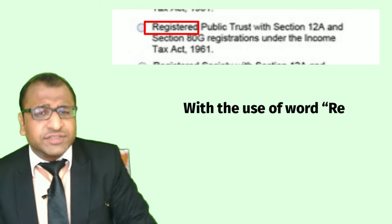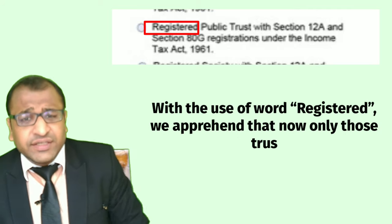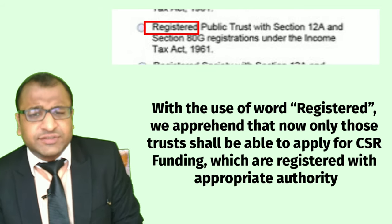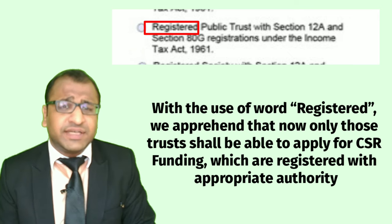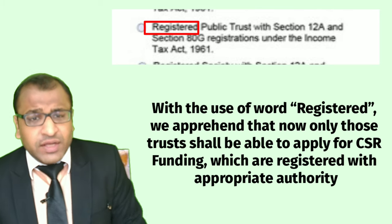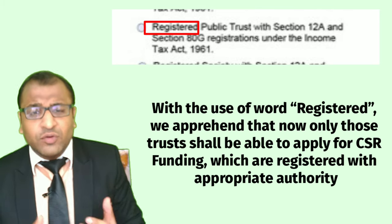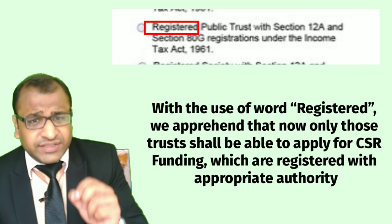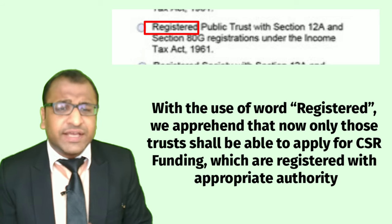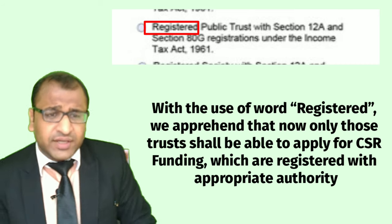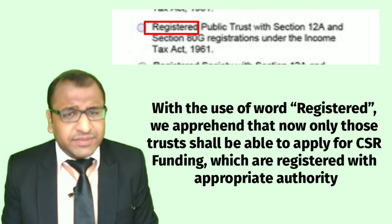I would also like to draw attention to the word 'registered' used with the public trust. Usually, trusts are not registered since it is not mandatory under the Indian Trust Act 1882. With the use of the word 'registered,' we apprehend that only those trusts registered with appropriate authority shall be able to apply for CSR funding. For example, in West Bengal, trusts are registered with the Registrar of Assurances; in Maharashtra, with the Charity Commissioners.